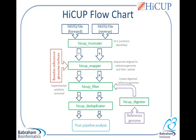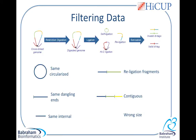So after the mapping is performed, a filtering step is performed to remove the commonly encountered Hi-C artefacts. Looking at the top diagram, this shows schematically the Hi-C process, where we have a cross-linked genome that is digested, and then there is a ligation step where we re-ligate the previously digested restriction fragments. At the bottom, you can see the canonical Hi-C di-tag, where we have a ligation event between two spatially separated restriction fragments, i.e. they are not contiguous to one another on the genome.